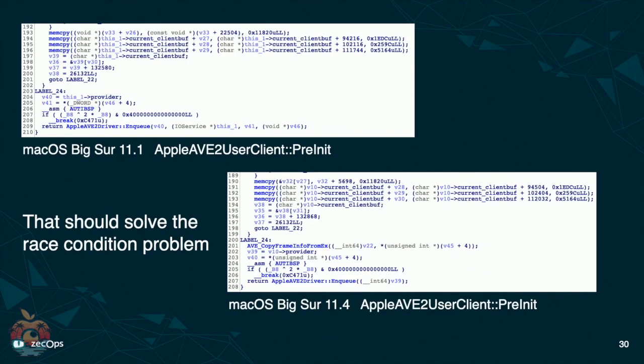Here's the code comparison for the patch. Apple added a buffer between the use of the mapped memory. I don't know how this will affect the efficiency of the driver, but Apple only did this for a small part of the mapped memory, which is smart. They should have done this three years ago. So far, I did not discover a new approach to exploit this driver.